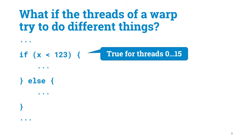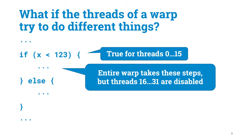The answer is that there is an execution mask that tells which threads are enabled and which are disabled. For example, if you have an if-else statement where the condition is true for threads 0–15 and false for threads 16–31, then the warp will run both branches. During the if-branch, threads 16–31 are disabled.